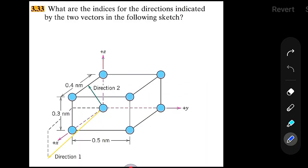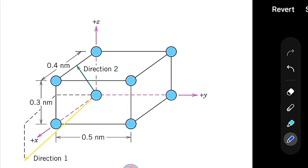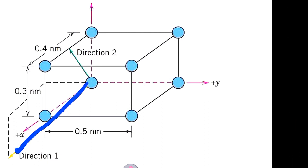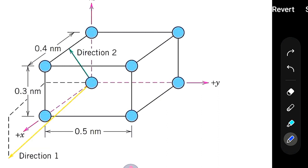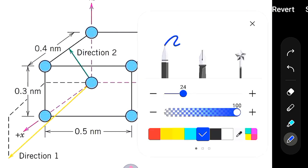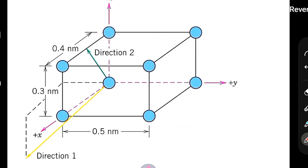Hello everyone, in this video we are going to find out the Miller indices for directions. As we can see in the figure, there are two different directions: direction one and direction two. We'll be finding out the Miller indices for both. Let's get started with direction one. The lattice parameters shown are 0.3 nm, 0.4 nm, and 0.5 nm. This structure is a cuboid — the three lengths are not equal to each other, so it's not a cubic unit cell.